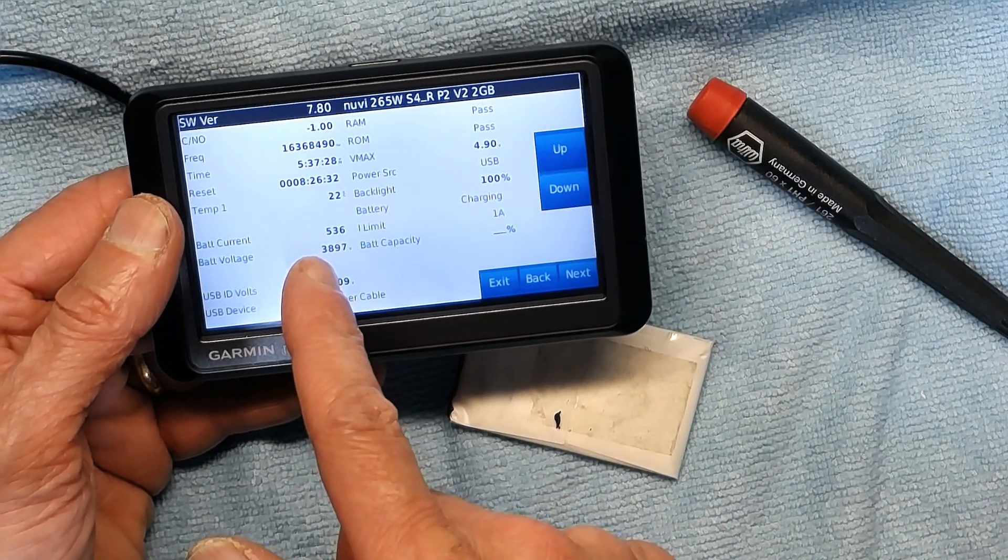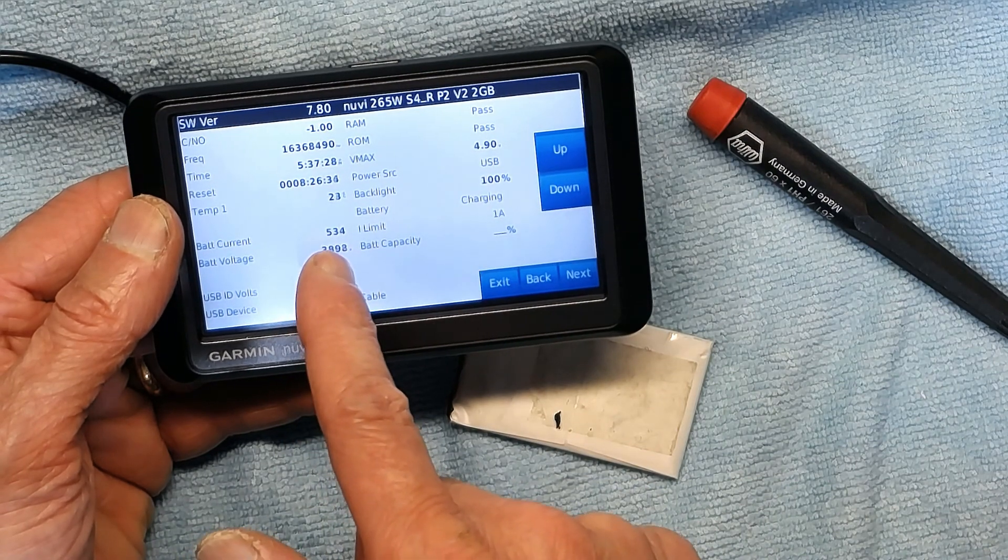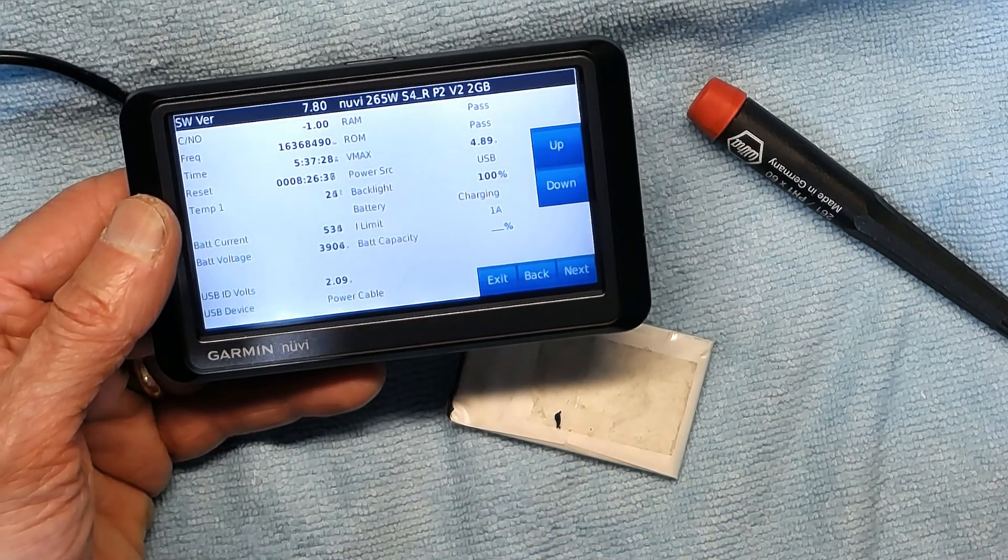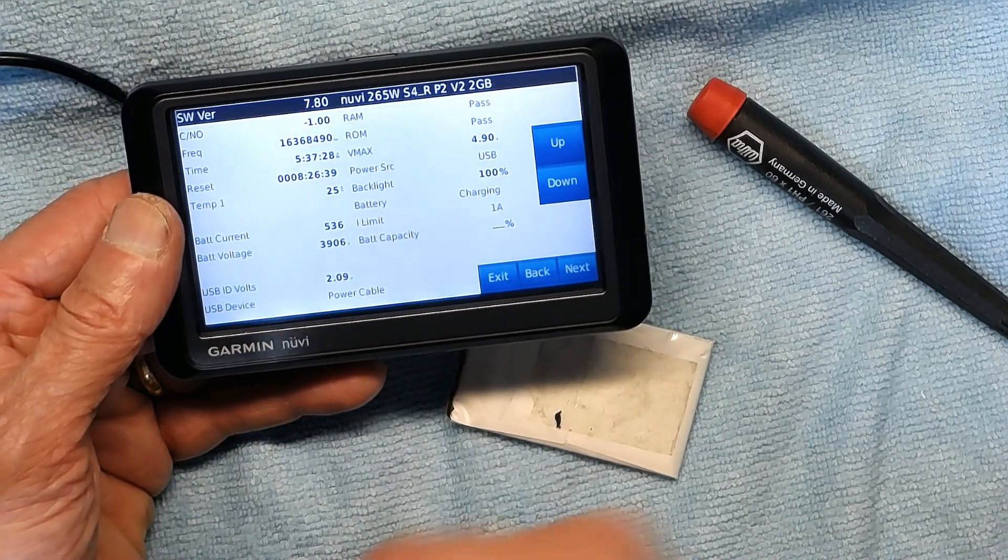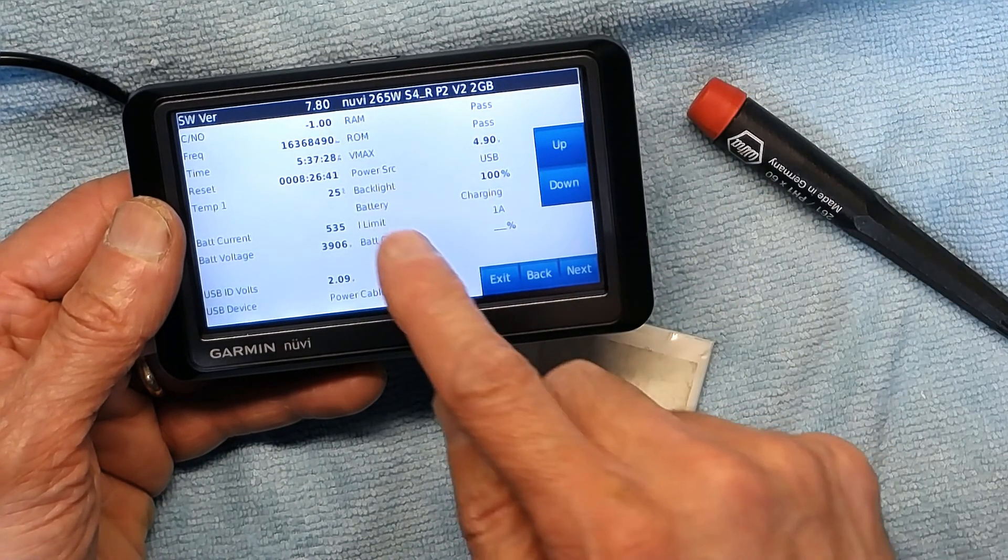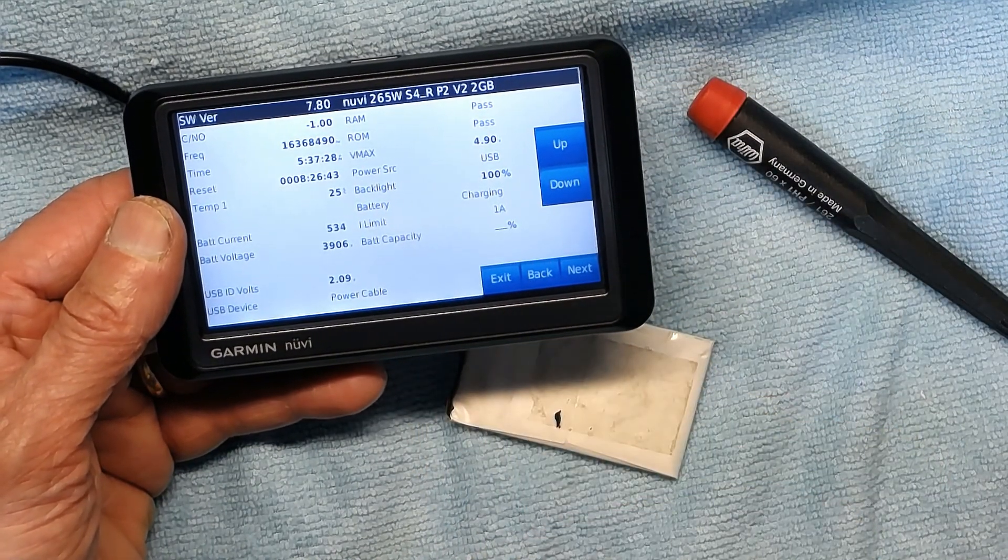Now watch, the battery is healthy because it takes charge. The charging current is 534 milliamps or half an amp, and the voltage is 3.9 volts, and basically the battery status is charging, shows that the battery is charging.